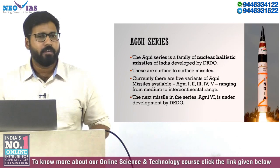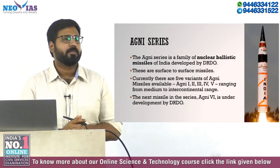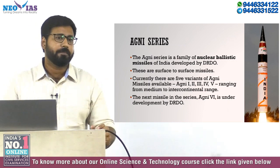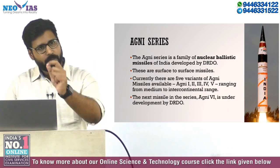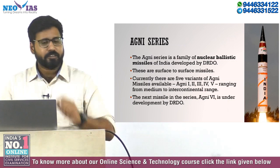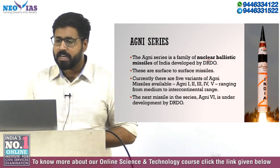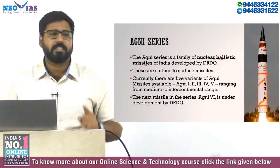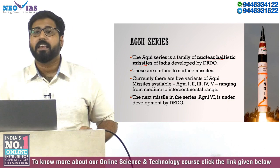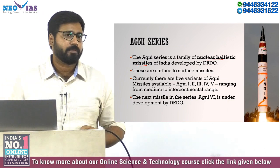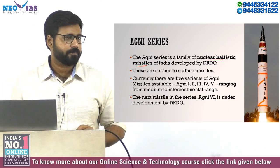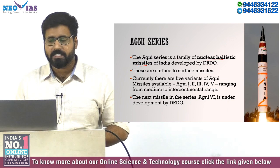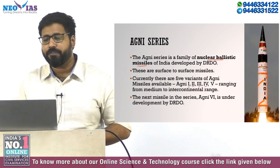The Agni series of missiles are nuclear-capable ballistic missiles, meaning the warhead — the bomb on top of the missile — is a nuclear warhead, capable of causing significant damage. There are five Agni series missiles: Agni 1, 2, 3, 4, and 5.